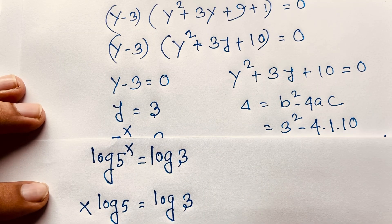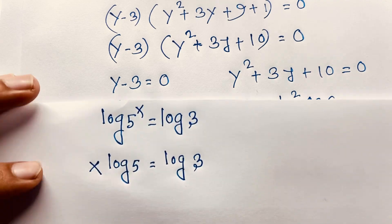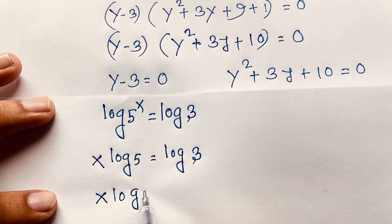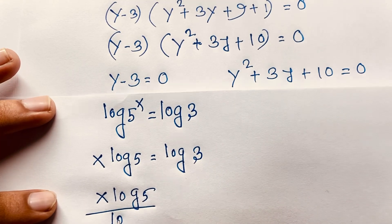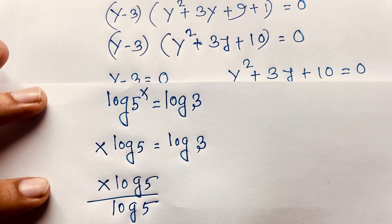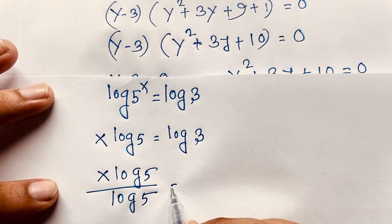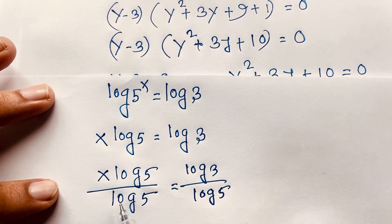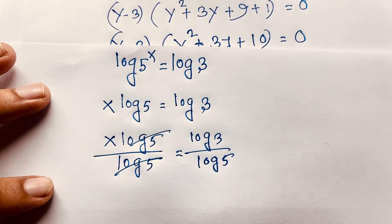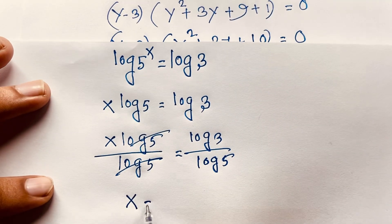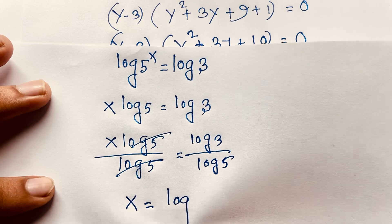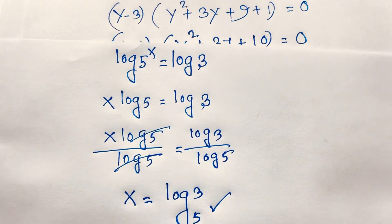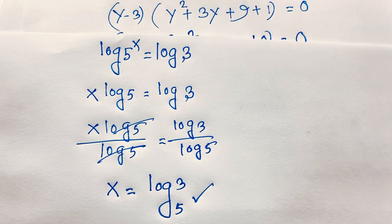Now I divide both sides by log 5. So x · log 5 divided by log 5 equals log 3 divided by log 5. The log 5 terms cancel, and we find our final real solution: x = log 3 base 5. This is our final answer in this exponential math problem.